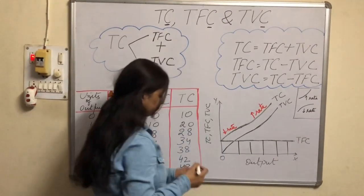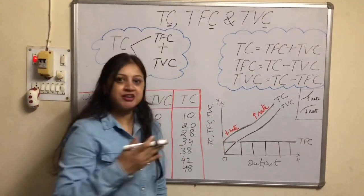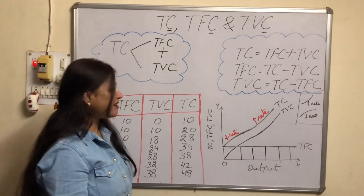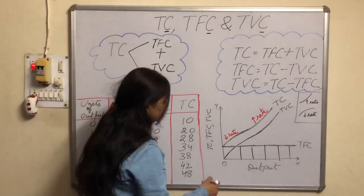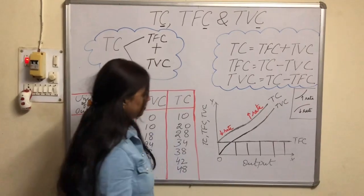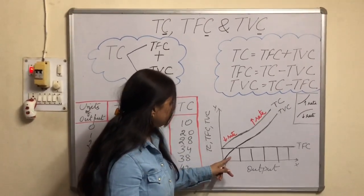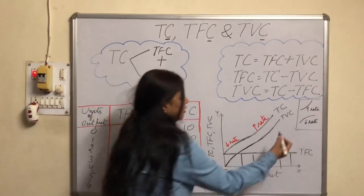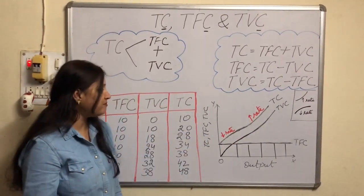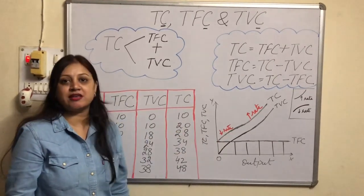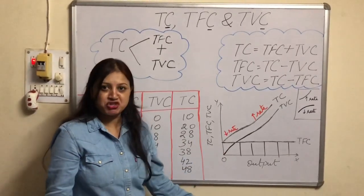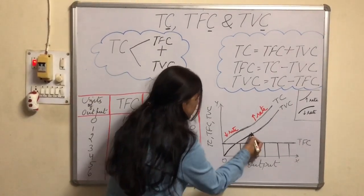If you see the TVC curve, this is the TVC curve — it is increasing because it is going upward, increasing with increase in output. The slope is going in a direction that means it is increasing at a diminishing rate. Here also it is increasing at a diminishing rate because the steepness of the curve is decreasing, as I have explained many times in my videos about increasing rate and diminishing rate.